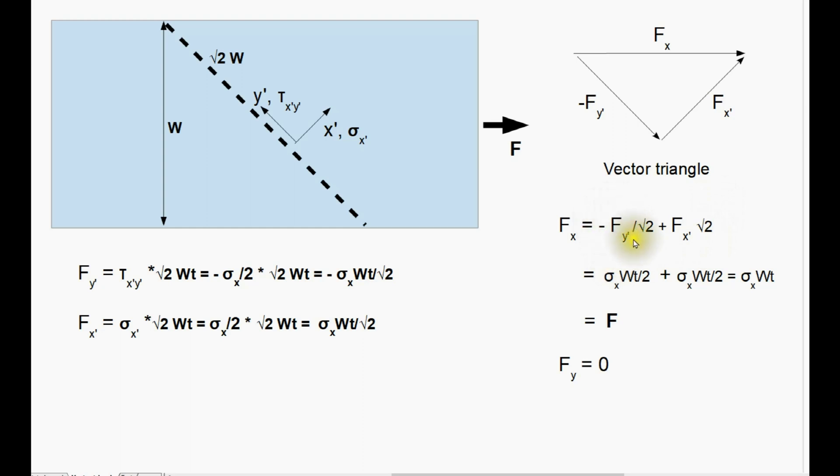We know what the value of these forces are, because we calculated them here, we put them back in, and this gives us the net horizontal force, sigma X times WT, which is merely the force which we applied in the first place. And likewise the vertical component, FY' times sin 45 degrees, FX' times sin 45 degrees, and the vertical force component is zero, which again is exactly what we put in.